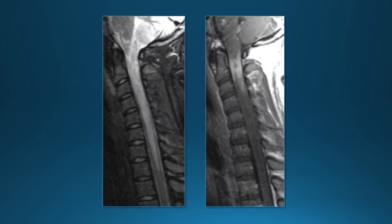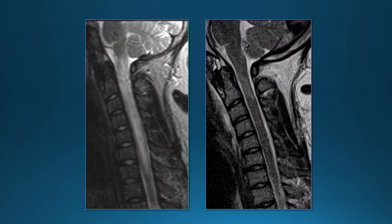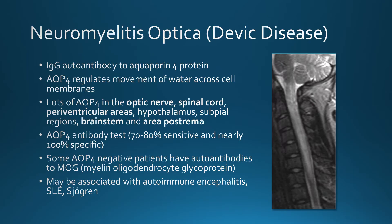This 30-year-old woman presented with weakness and paresthesias with fairly severe symptoms. There is a fairly extensive area of abnormal signal involving most of the spinal cord extending up to the medulla, with some patchy enhancement. The axial images show the lesion is quite extensive, involving both gray and white matter of the spinal cord. The image on the right is following steroid therapy.